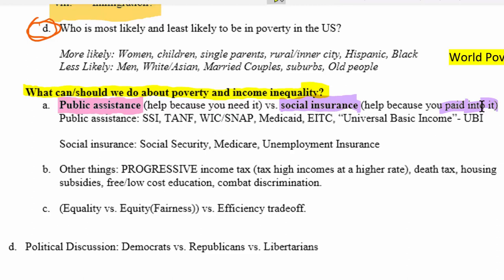Common public assistance programs in the United States include SSI (Supplemental Security Income), Temporary Assistance for Needy Families (mostly for women raising children alone), the Women Infant and Children nutrition program, the Supplemental Nutrition Assistance Program, health care for the poor, and the earned income tax credit. These are things you qualify for simply because you need them — you don't have to have paid into them.